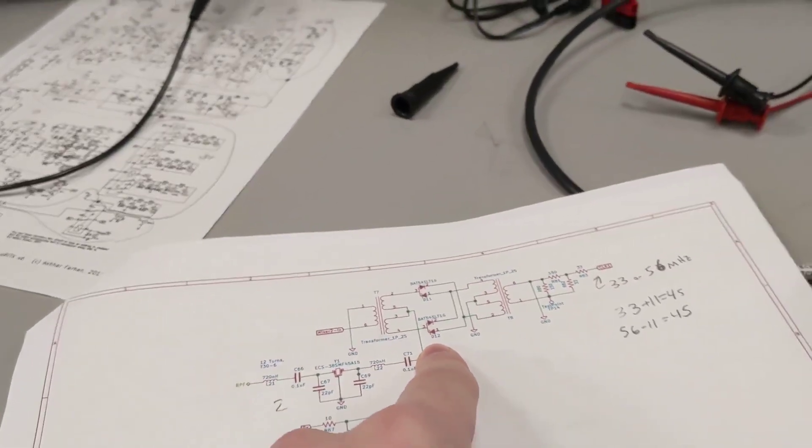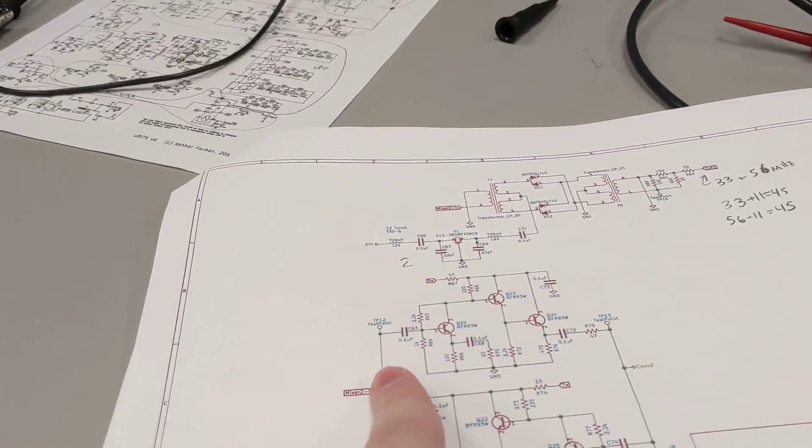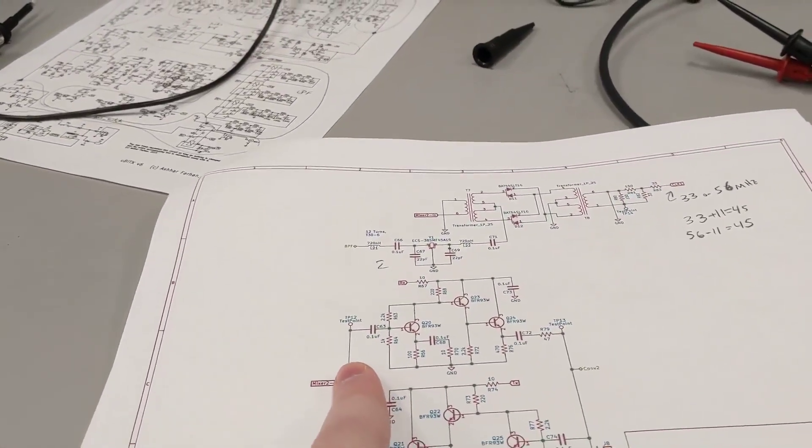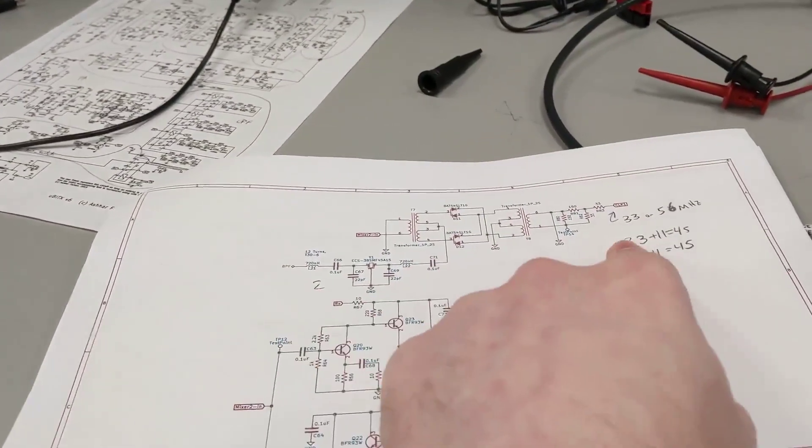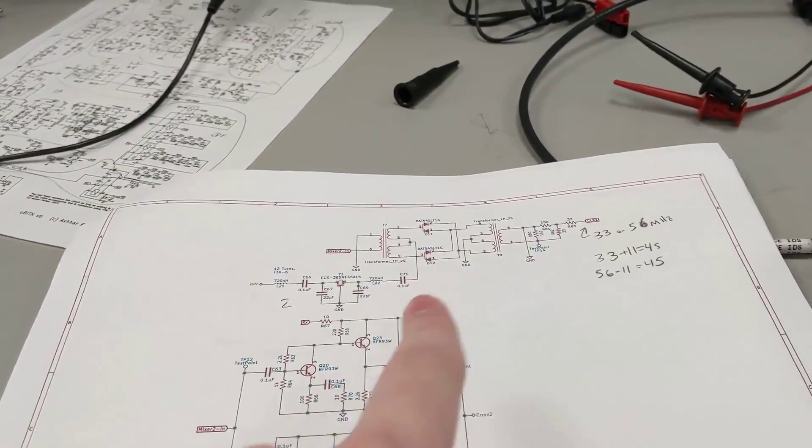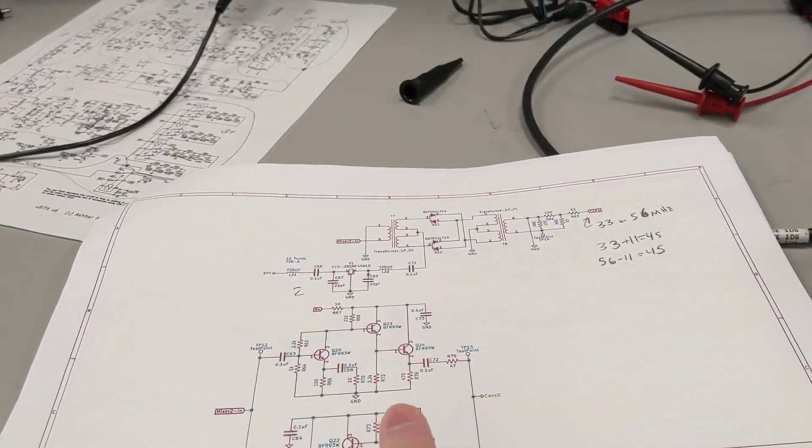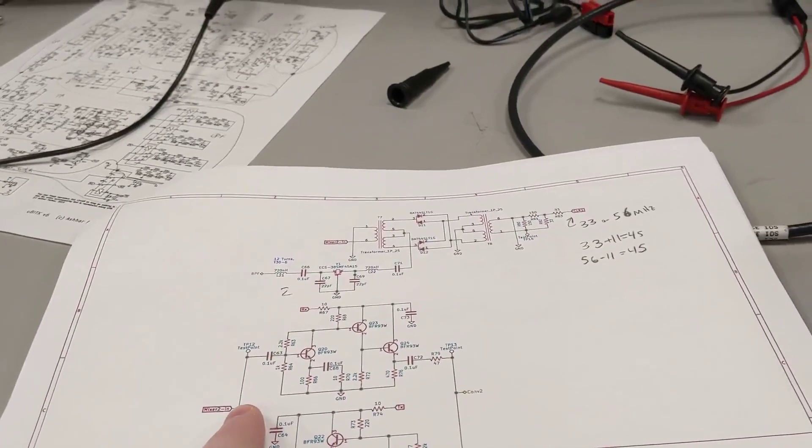So now what should happen is if we take a look over here, we should see a sum and difference frequency. So this 45 MHz is going to be either 33 or 56. And we should see a sum and difference frequency over here somewhere. And I will check on that.